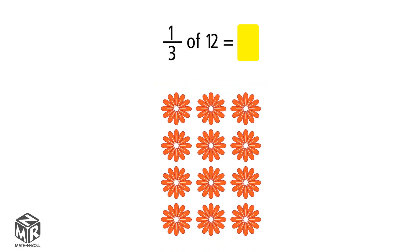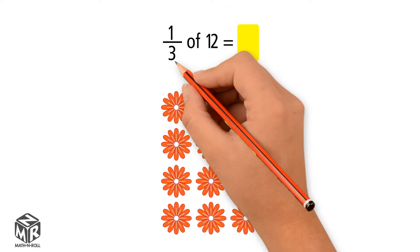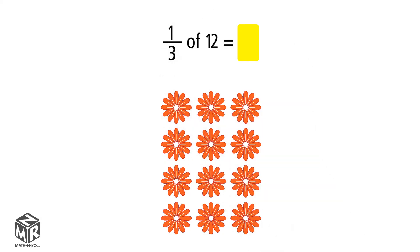Let's try another example. Use the model to find one-third of 12. We need to find one-third of 12, so we should have three equal groups.